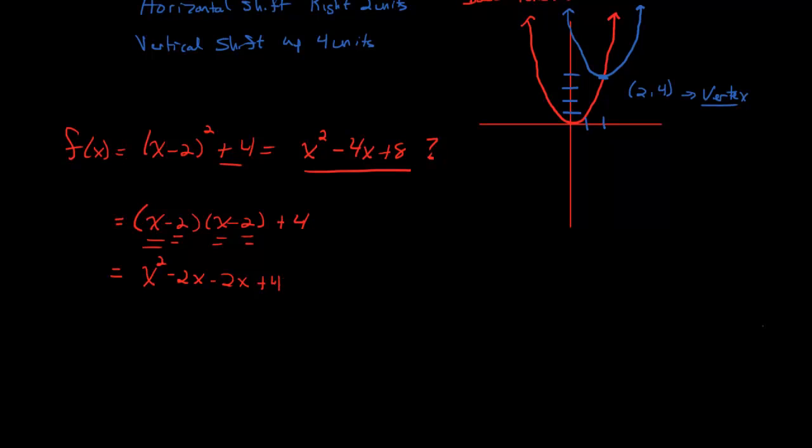And then we realize that we have this value of plus 4 at the end. So this actually gives us x squared minus 4x plus 8, which is what we saw right here.